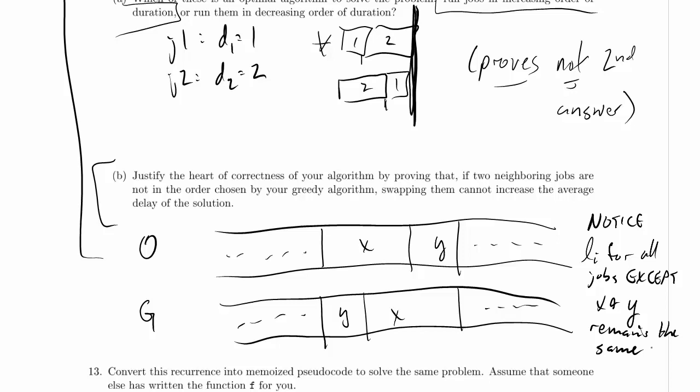Why does it remain the same? Well, we didn't move around anything before this point, so clearly we didn't affect their latencies. After this point, we did reorder something that came before that job, but we did not change the total amount of time spent by all the jobs that came before subsequent jobs, which means their latency stays the same. So L_I for all other jobs is the same.